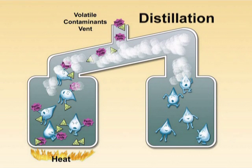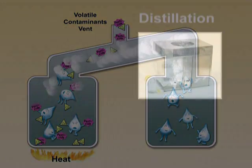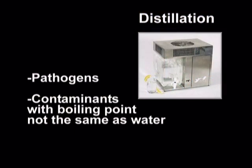Distillation uses heat to vaporize water, and then the vapor is cooled and condensed. Most contaminants vaporize at a higher temperature than water, so they remain in the heating chamber. However, the heat inactivates pathogens. Consider distillation to manage pathogens in drinking water. Distillation can also remove nearly 100% of all contaminants, with the exception of those that vaporize at the same temperature as water.